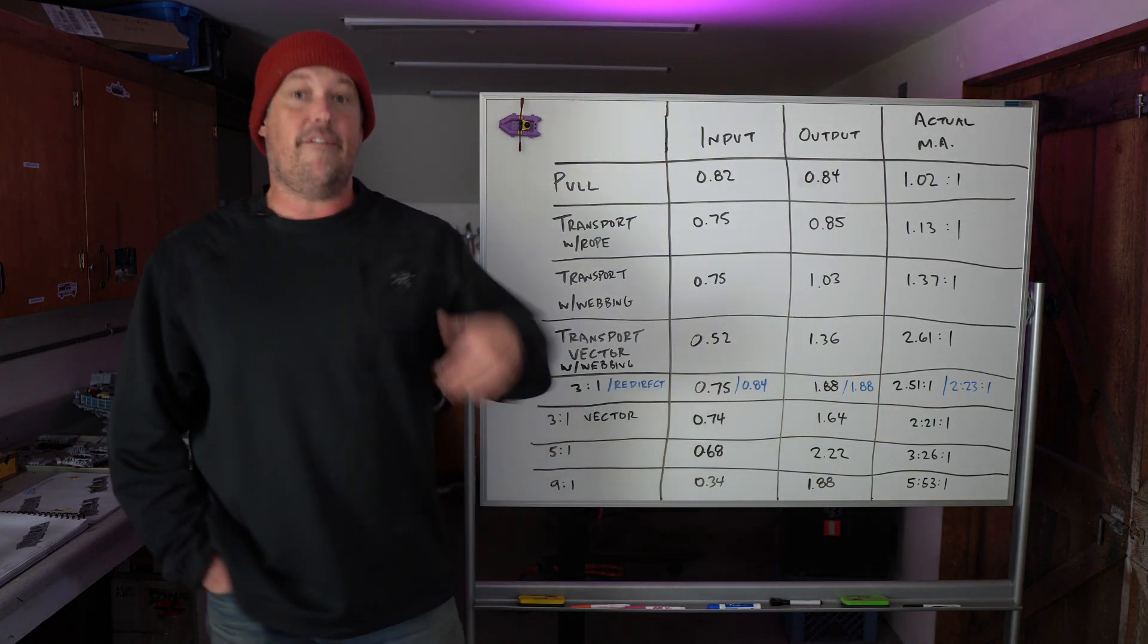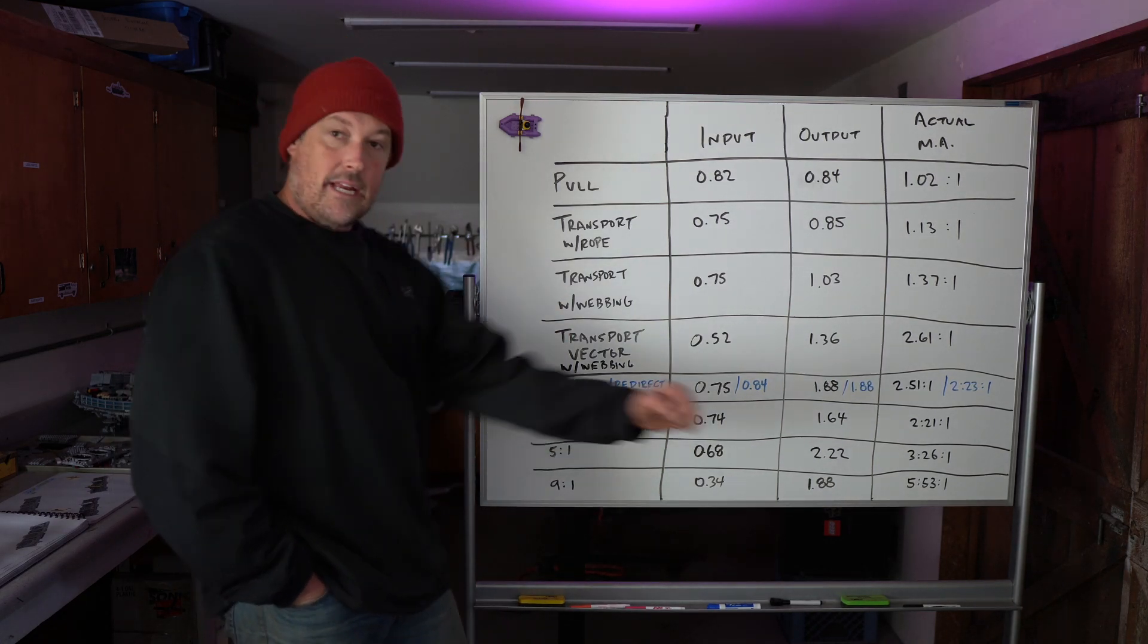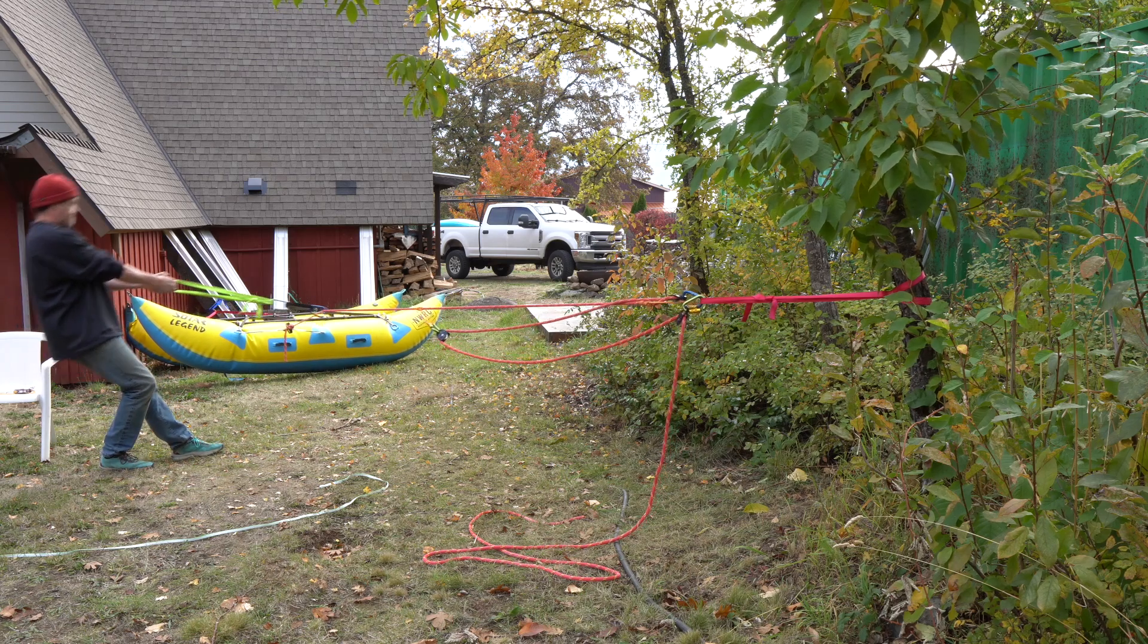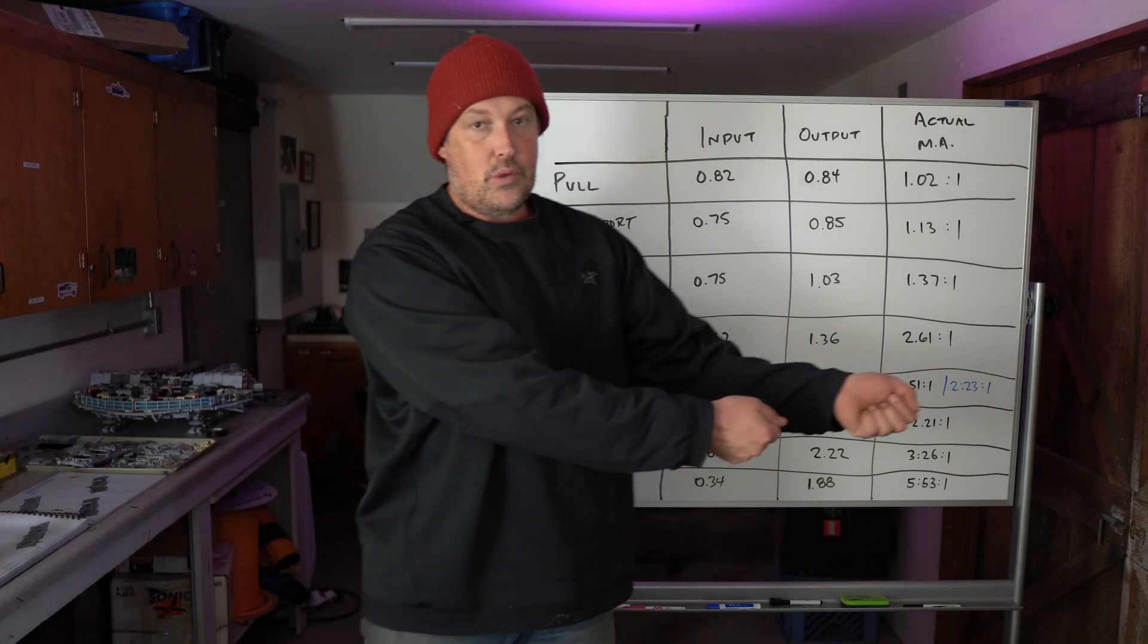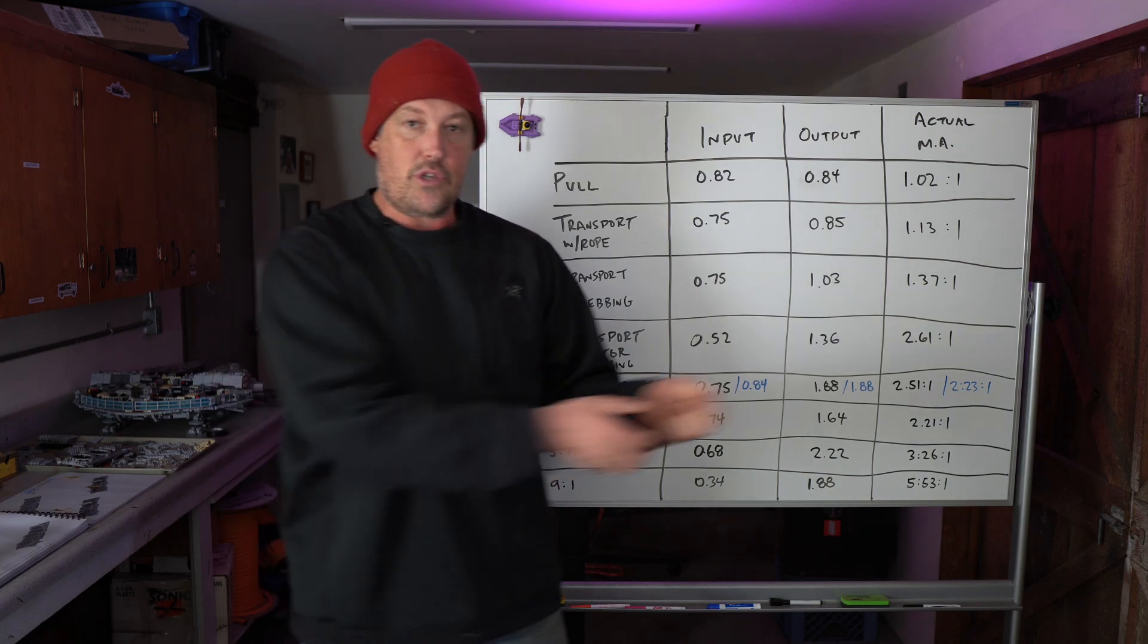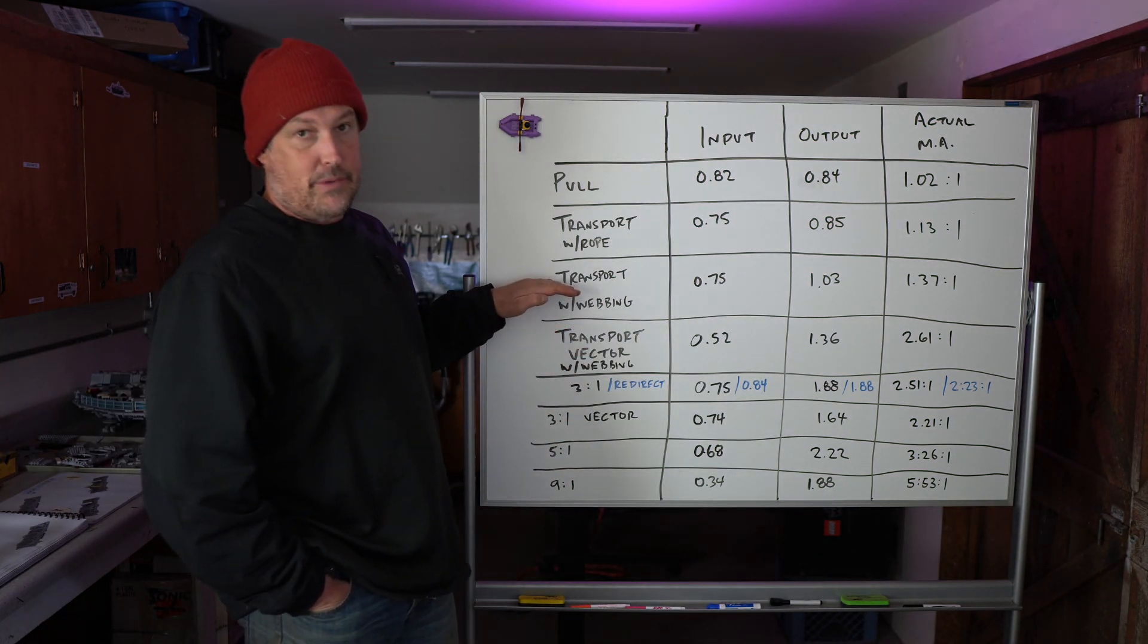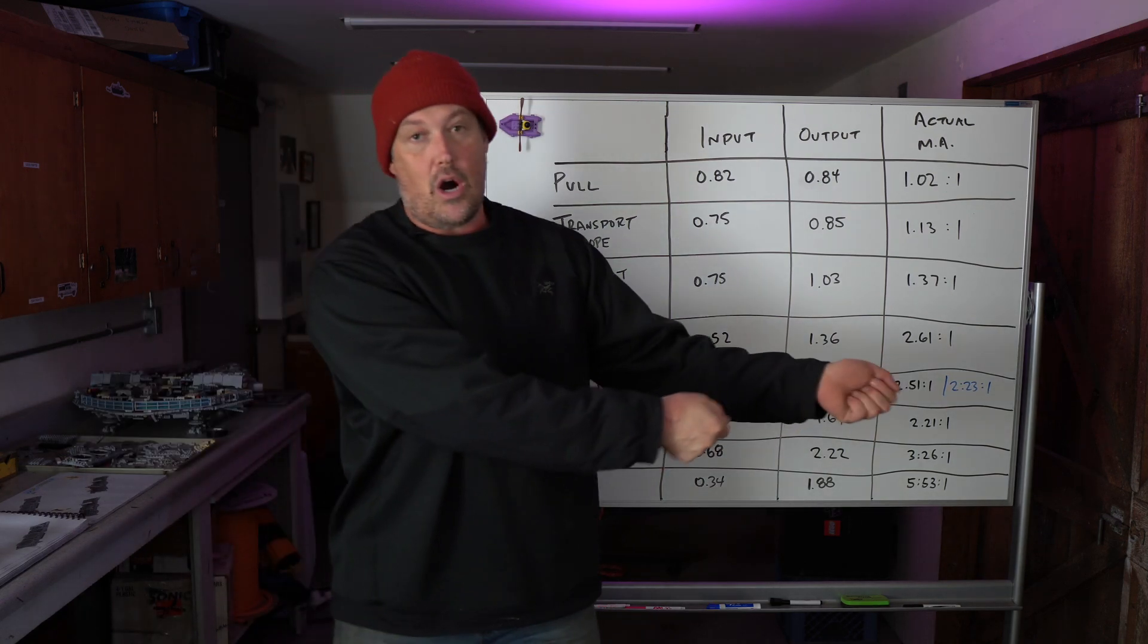And then I said, hey, let's throw a vector pull on top of that. So I did a transport hitch and did a vector pull on top of that. Why don't we tighten it up with a 3 to 1 and then do a vector pull? And I got 2.2 to 1, which should be 2.21 to 1, which is less than I got with a transport hitch. And the reason why is when you pull on a 3 to 1, the progress capture isn't perfect. There's a little bit of slop, so it's hard to get the rope really tight. I could have had somebody minding the pulley and it could have been a little bit tighter.